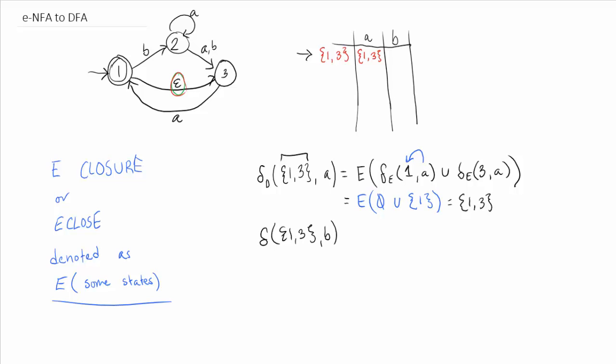I'm doing input B. Getting the e-closure of, let's put that in there too. On 1, what happens if we get B union? On 3, B.